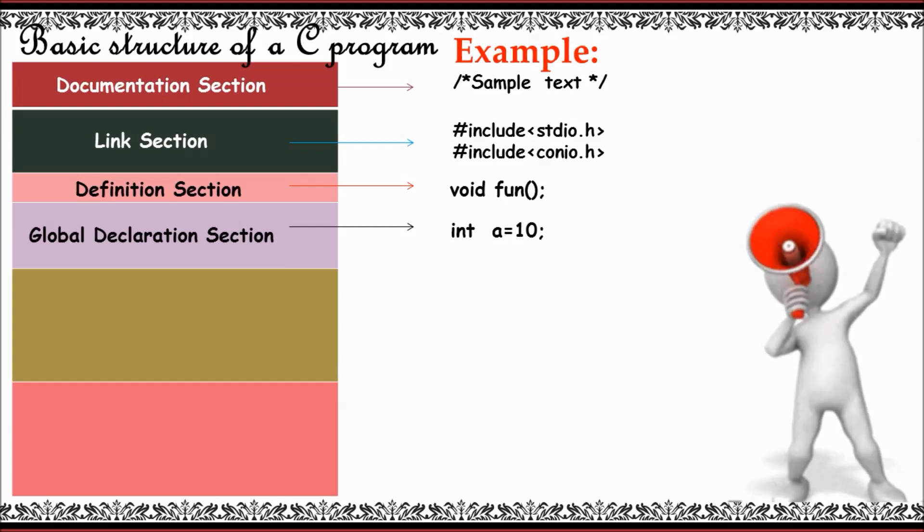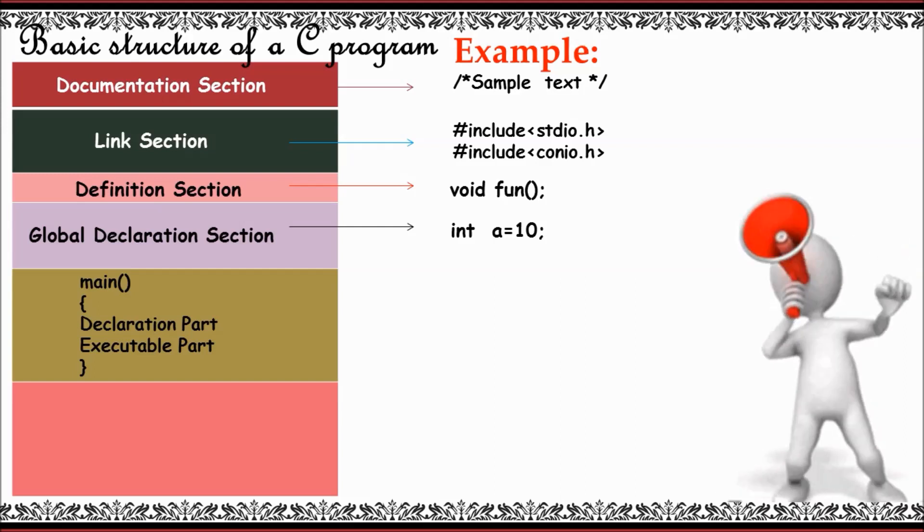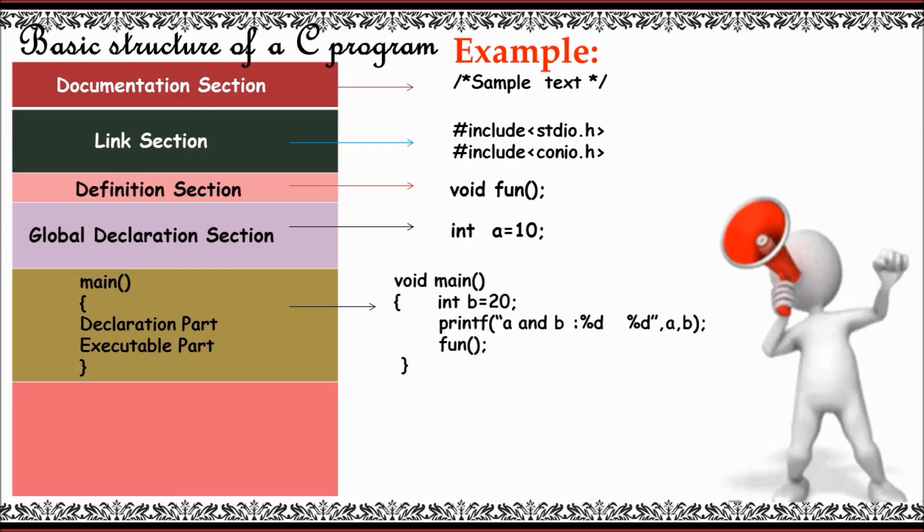And the next part is the main function. Every C program has one main function which indicates the basic starting of the program. This part consists of two steps: declaration part and executable part. In declaration part, in this example I have given int b equals 20, it comes under declaration part.